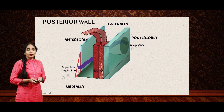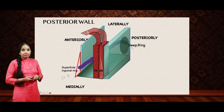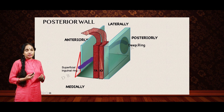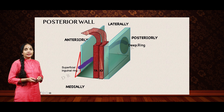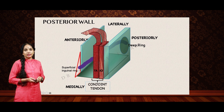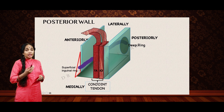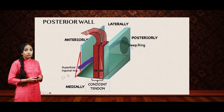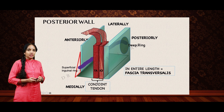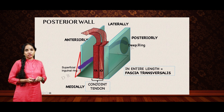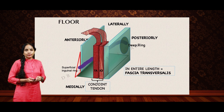Now let us see the posterior wall. Towards the medial end of the inguinal canal, you can see how the transverse abdominus and the internal oblique together form the conjoint tendon. But throughout the entire length of the posterior wall, it is formed by the fascia transversalis, represented by the green box. You can confirm this because the deep ring is visible there, with structures entering through it.